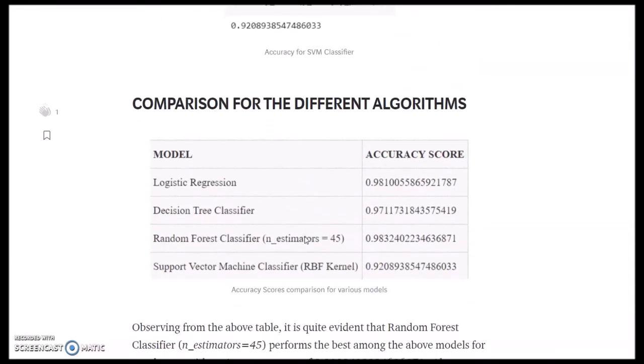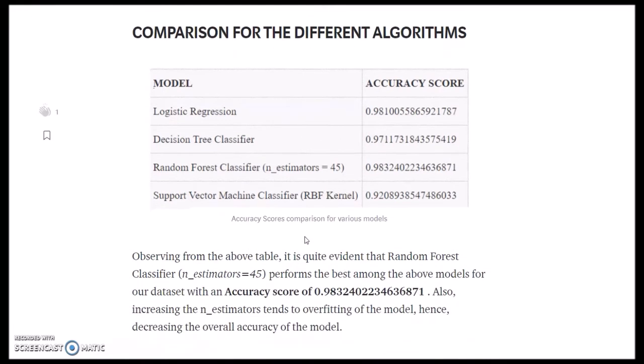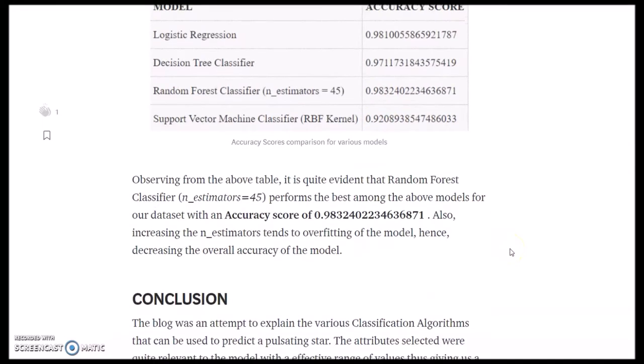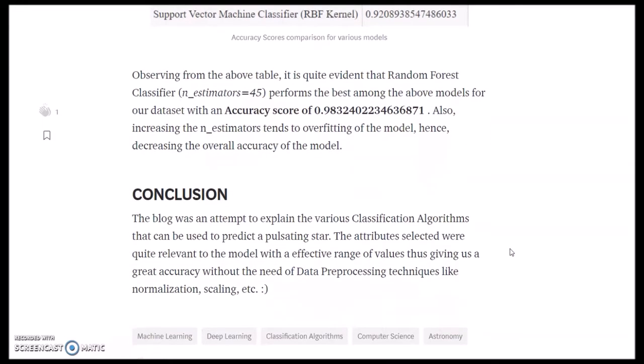This is the comparison of accuracy scores of all the models we have used. As we can see, the random forest classifier with 45 n_estimators works the best with an accuracy of 0.983 for our dataset. So this was an attempt to explain the various classification algorithms that can be used to predict a pulsating star. The attributes selected were quite relevant to the model with an effective range of values, thus giving us great accuracy without the need for data preprocessing techniques like normalization, scaling, missing value imputation, etc. Since the accuracy score was quite good, we don't need to use regularization techniques too.